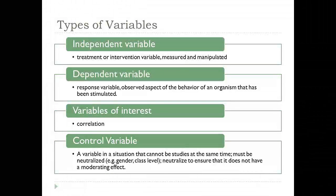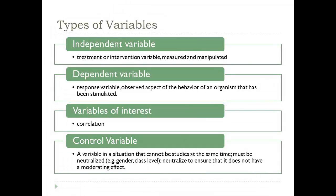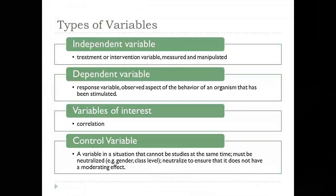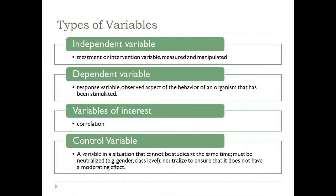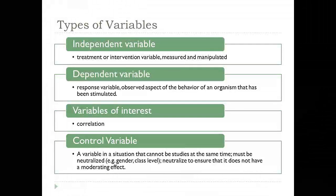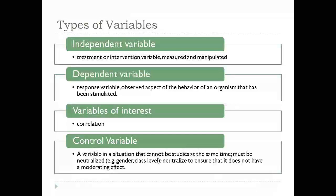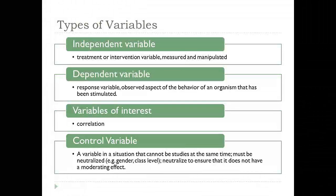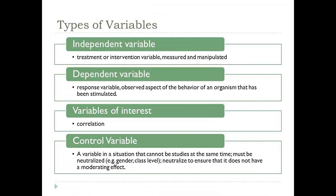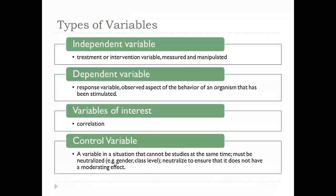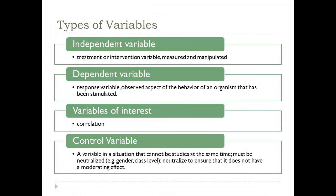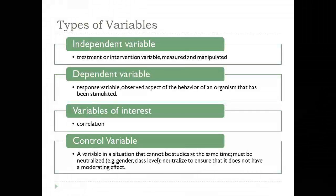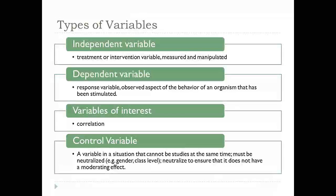By definition, you really can't have an independent and dependent variable in a correlational study because you're simply looking at the relationship between two different variables. Deciding which is really independent and which is dependent can be arbitrary. So in a correlation study, the relationship between variables is considered. In an experimental study, you really are manipulating a variable and measuring the effect of that manipulation on the other variable.